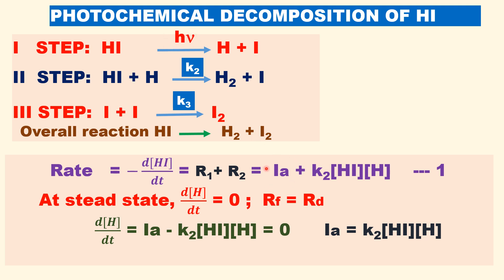Therefore, the total rate equals Ia plus the rate of the second step: K₂ times the concentration of HI times the concentration of the hydrogen atom. Now, in this reaction the intermediate hydrogen atom is formed, which is highly unstable. By using the steady state approximation, the rate of formation of the hydrogen atom is equal to the rate of disappearance of the hydrogen atom. At steady state, the intermediate is formed and immediately decomposed.